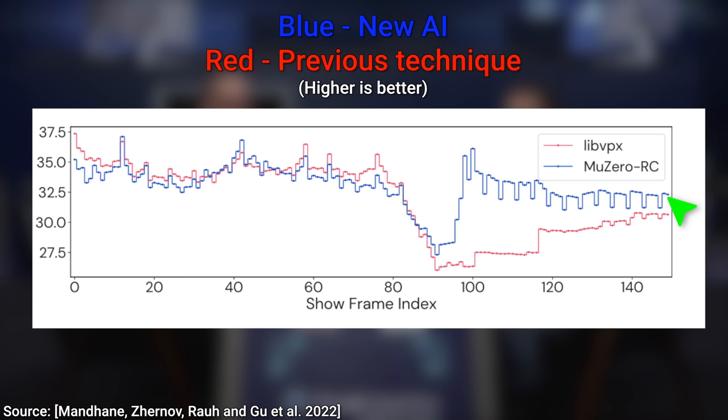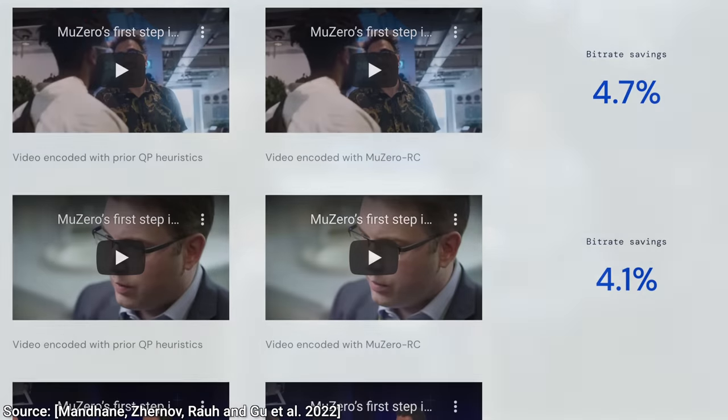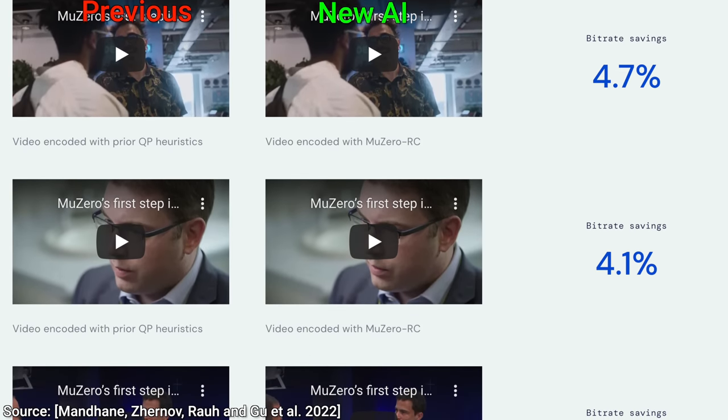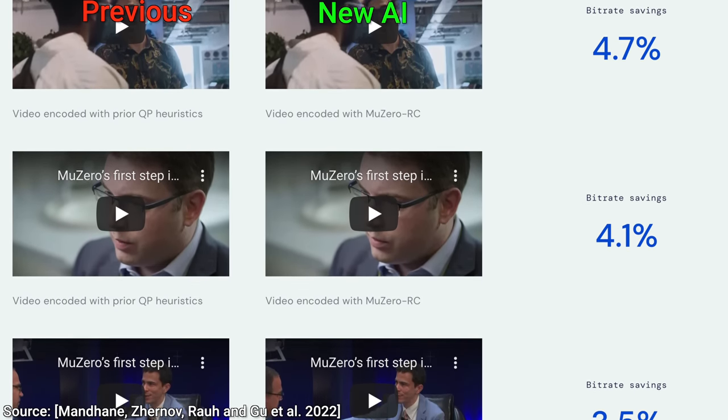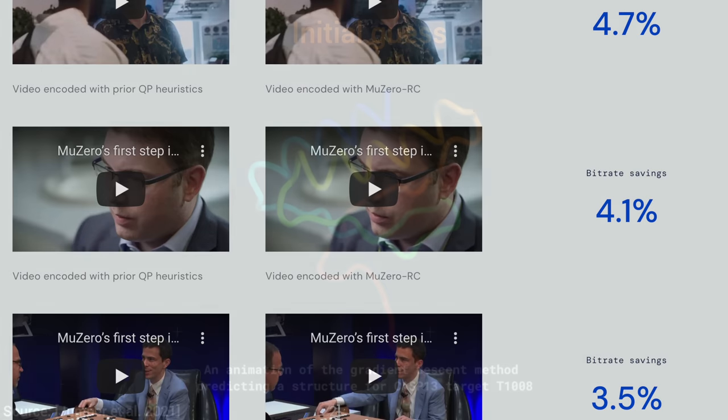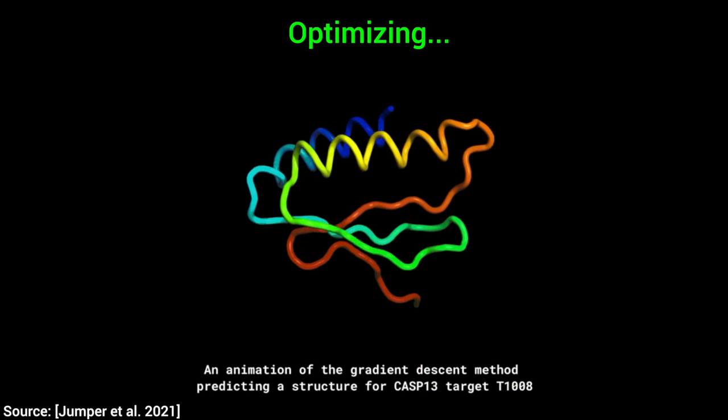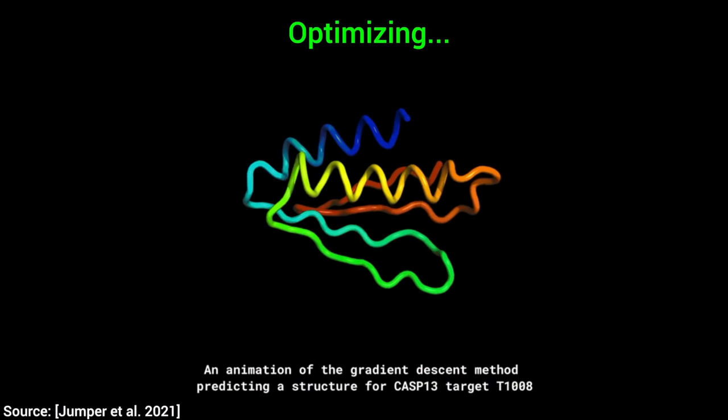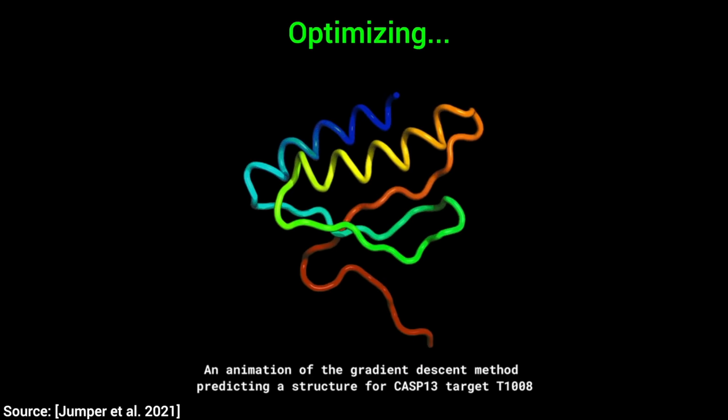And to have a first crack at such a mature problem and manage to improve it immediately, that is almost completely unheard of. Yet they have done it with protein folding, and now they seem to have done it for video compression too. Bravo, DeepMind!